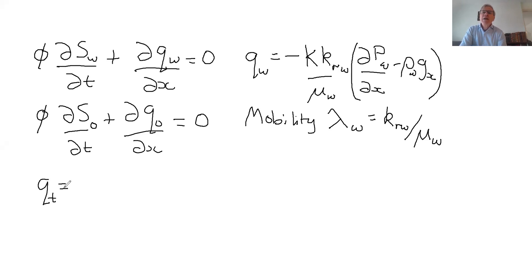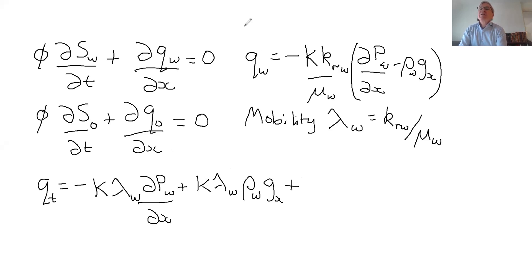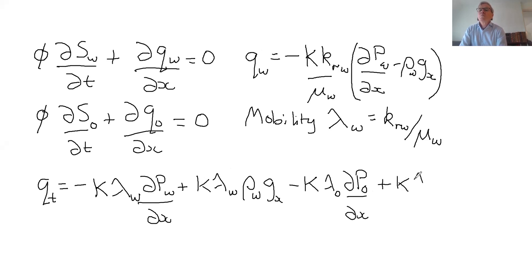Let's now write Qt using the multi-phase Darcy law. There's going to be a couple of pages of algebra before we get to anything terribly interesting, but bear with me. Qt is K*lambda_w times the pressure gradient and gravity terms for water, plus K*lambda_oil times the corresponding terms for oil — that's my total velocity.